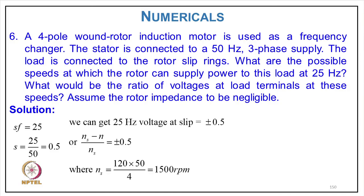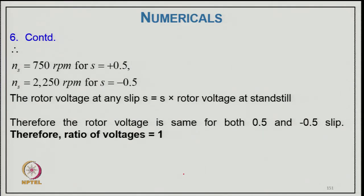Numerical Example 6: A 4-pole, 50 Hz three-phase induction motor is used as a frequency changer; the stator is connected to a 50 Hz three-phase supply and the load is connected to the rotor slip rings. Required rotor output frequency = 25 Hz. Slip s = fr/f = 25/50 = ±0.5. For s = +0.5: Ns = 1500 RPM, Nr = 750 RPM. For s = −0.5: Nr = 2250 RPM. The ratio of rotor voltage to stator voltage equals the slip ratio, so the rotor voltage ratio = 0.5 (i.e., half the stator voltage).